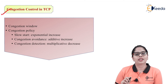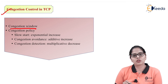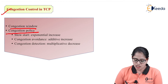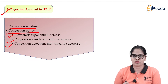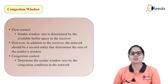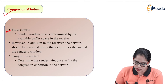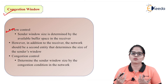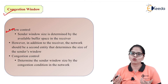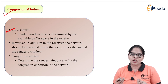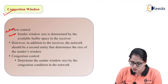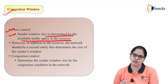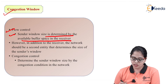Now let us discuss congestion control in TCP, starting with the congestion window. Flow control matches the speed of sender and receiver — if one speed is higher or lower, the buffer overflows and packets are discarded. The sender window size is determined by the available buffer space in the receiver. TCP uses a sliding window protocol, and window size is defined based on how much buffer space is available.